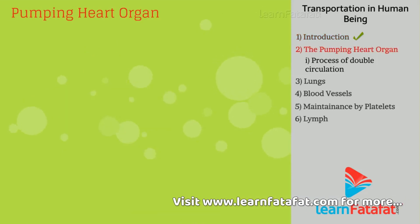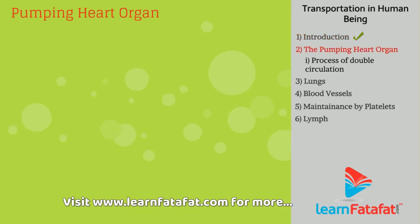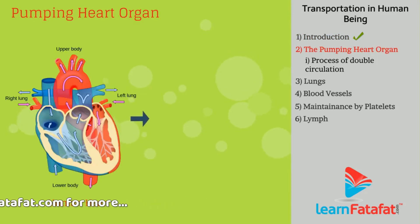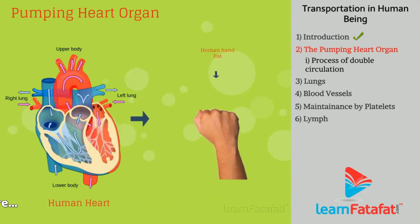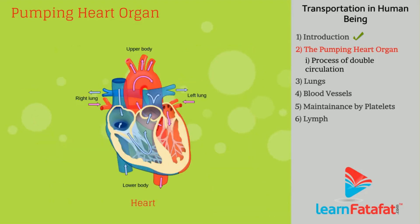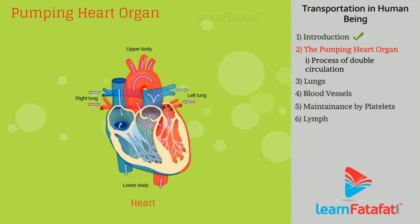The pumping organ — the heart — is a muscular organ that is as big as our fist. In order to prevent oxygen-rich blood from mixing with deoxygenated blood, the heart has 4 chambers.